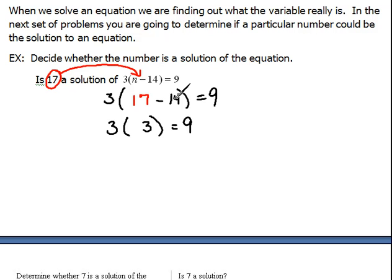So 17 minus 14, we have to do that first because it's in parentheses. Remember your order of operations. So now we have 3 times 3 equals 9, and 3 times 3 is, in fact, 9. Because 17 made this entire mathematical sentence true, then it is a solution to that problem.